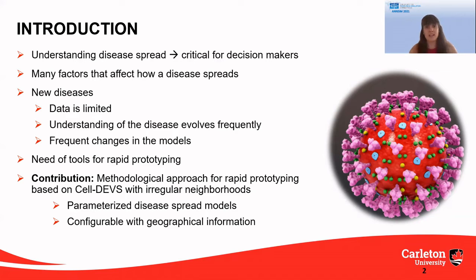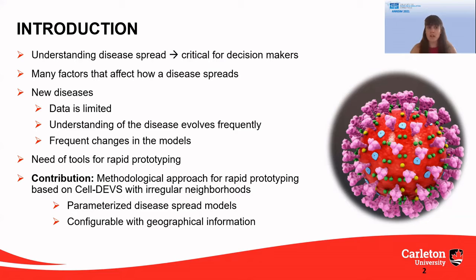The mortality rate, the measures that the government takes, and so on. This is especially important for new diseases, because the data we have when a new disease appears is limited. Additionally, understanding how the disease evolves changes frequently, and that requires frequent changes in the models we have to study the disease. That's why we need tools for rapid prototyping.